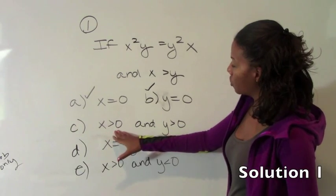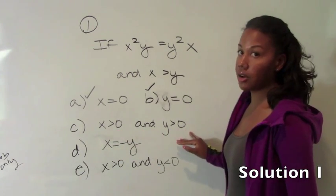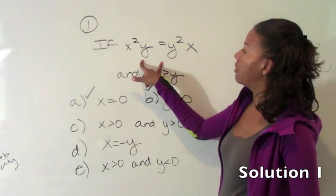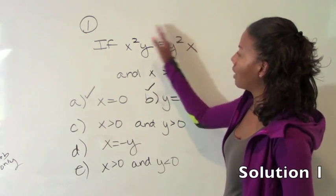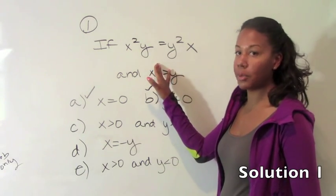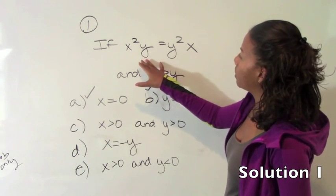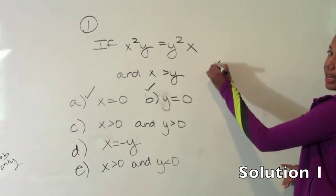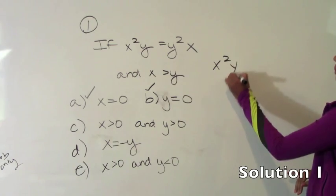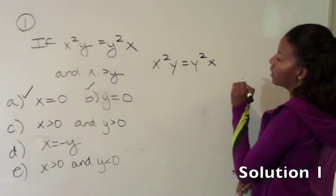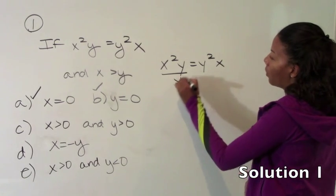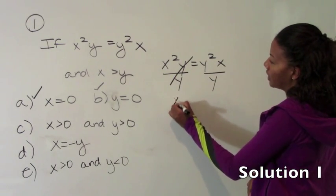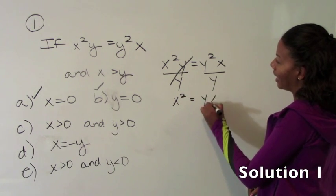So c says x is greater than zero and y is greater than zero, so we are looking at both sides being positive. So what we can do here is try to rewrite this so we can get a clearer idea of what's going on. So in this case, I'm going to suggest that we solve for x. We have x squared y equals y squared x. If I divide both sides by y, we get rid of the y over here. We get x squared equals y x.